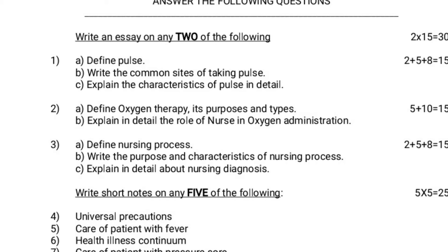Question 1A: Define pulse, which is for 2 marks. 1B: Write the common sites of taking pulse, which is for 5 marks. 1C: Explain the characteristics of pulse in detail, which is for 8 marks. So 2 plus 5 plus 8 equals 15 marks.